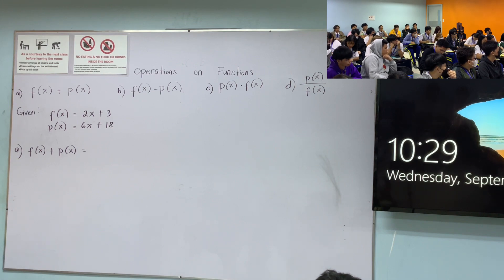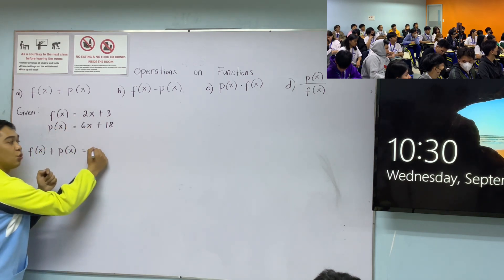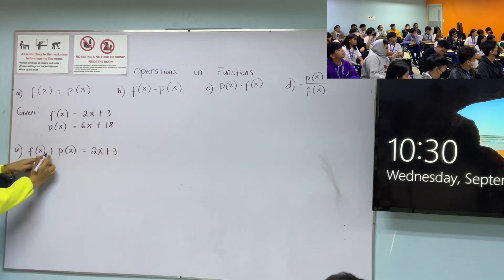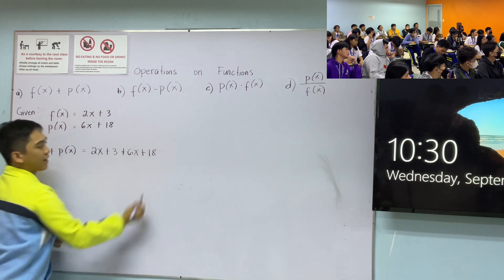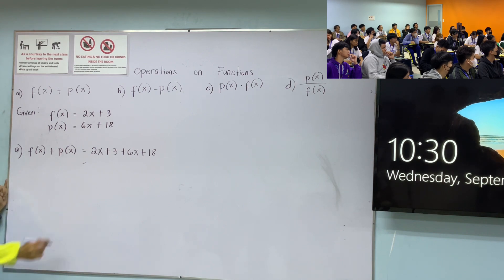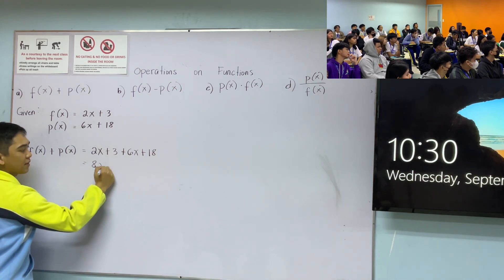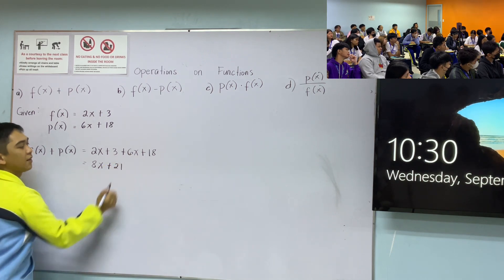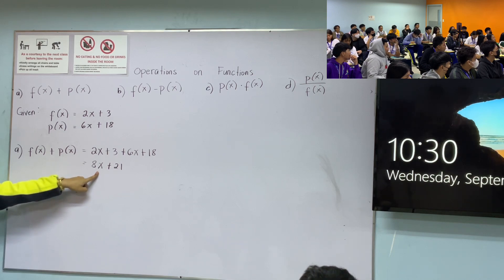We substitute the values. f(x) is 2x + 3, so we write 2x + 3, then add p(x) which is 6x + 18. Now combine like terms. 2x + 6x = 8x, and 3 + 18 = 21. So the answer is 8x + 21.